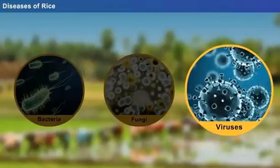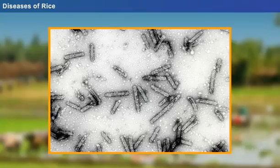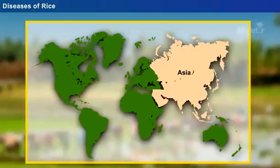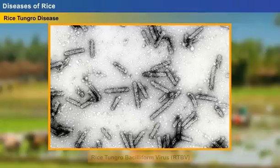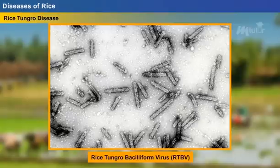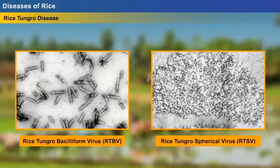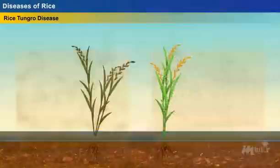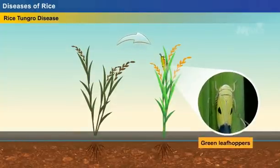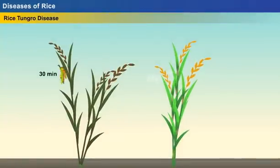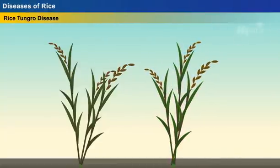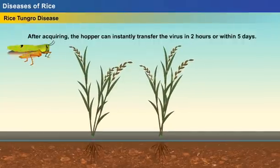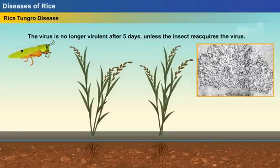Viral disease is yet again a serious threat to rice cultivation in Southeast Asia. Here we shall focus on one of the most virulent types: the rice tungro disease. This disease is caused by two viruses: Rice Tungro Bacilliform Virus (RTBV) and Rice Tungro Spherical Virus (RTSV). These viruses are transmitted from an infected plant to a healthy plant by green leafhoppers. A hopper which feeds on an infected plant for 30 minutes acquires the virus, and when the same insect feeds on a healthy plant for 15 minutes, the virus gets transmitted, causing infection.